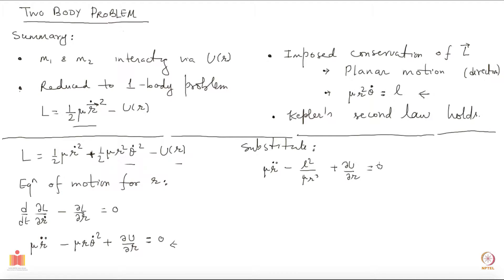I have removed theta-dot from this equation of motion, and now you see this is purely a one-dimensional equation of motion — a system with one degree of freedom, which is only r. The real system is still moving in a plane, so it is described by r and theta, but if you look at the r coordinate, it is like a one-dimensional system. We can repeat the same steps as for one-dimensional systems and start with the first integral, which gives the energy.